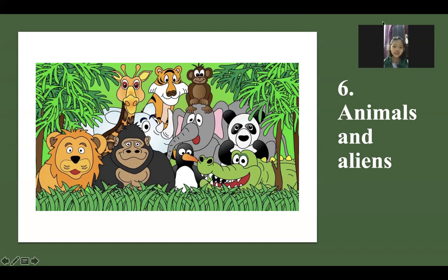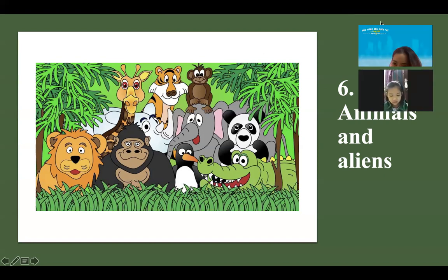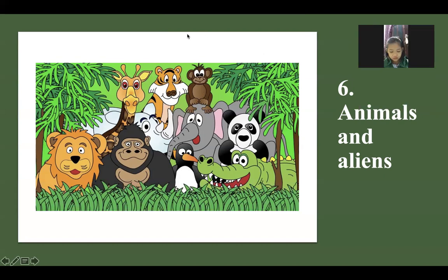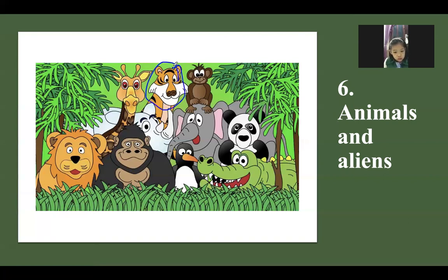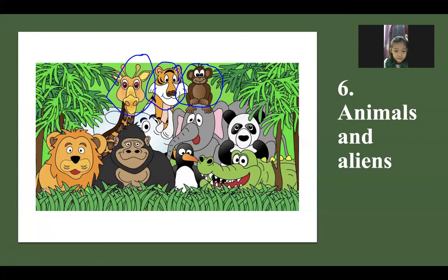Thế còn con nào mà Minh Châu hay nhìn thấy hàng ngày? Sở thú tiếng Anh là gì con? Zoo. Đúng rồi, zoo. Ở đây chúng mình có con gì đấy? Con gì đứng cạnh con monkey đấy? Con gì màu cam mà có sọc đen đây? Con tiger. Đúng rồi, tiger. Monkey. Giraffe. Giraffe là con hươu có cổ dài đúng không?